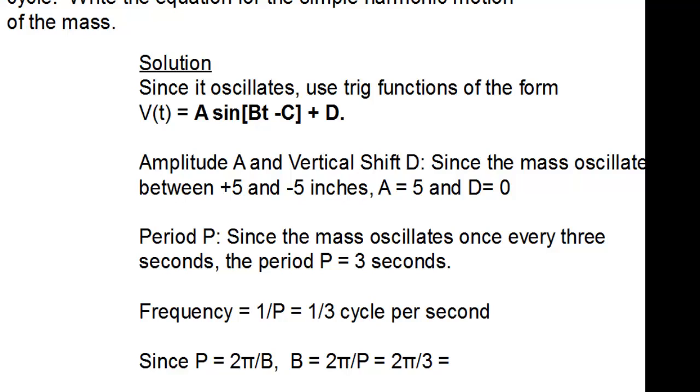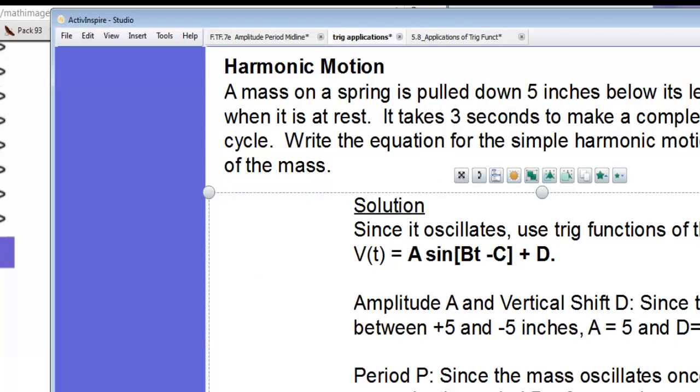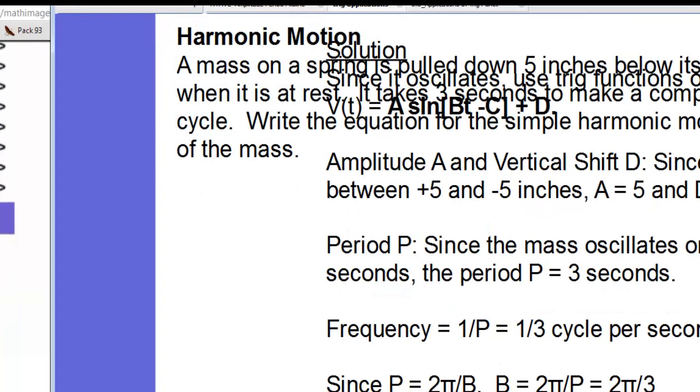Since the period we know is 2π divided by B, that second term in the sinusoidal equation, we can find B by manipulating that equation since we know P. B is equal to 2π divided by P. That B term is going to be 2π divided by 3. And finally, the phase shift is going to be 0 since we're really given no other further information about it. So what's our equation? In the end, our equation is going to be 5, because amplitude is 5, times the sine of 2π divided by 3 times T. So T is the time in seconds since the initial movement of the mass. So that's our final equation. V equals 5 sine 2π divided by 3T.